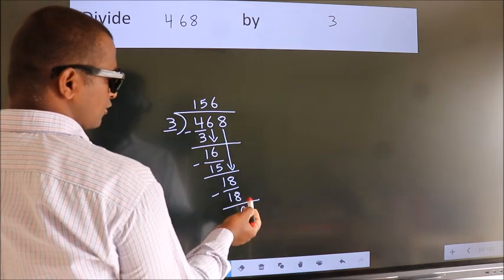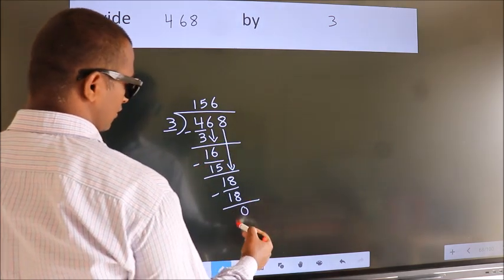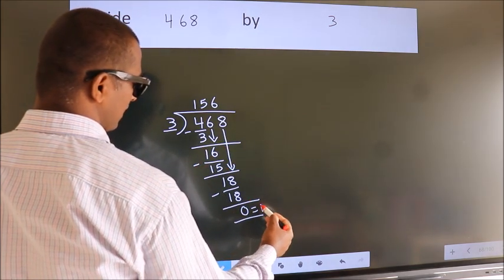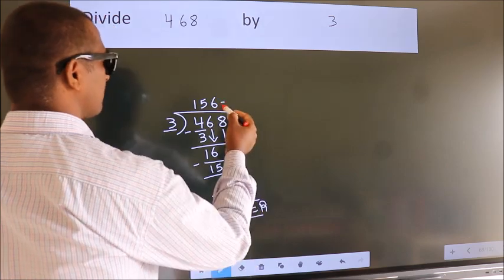No more numbers to bring it down. So, we stop here. This is our remainder. This is our quotient.